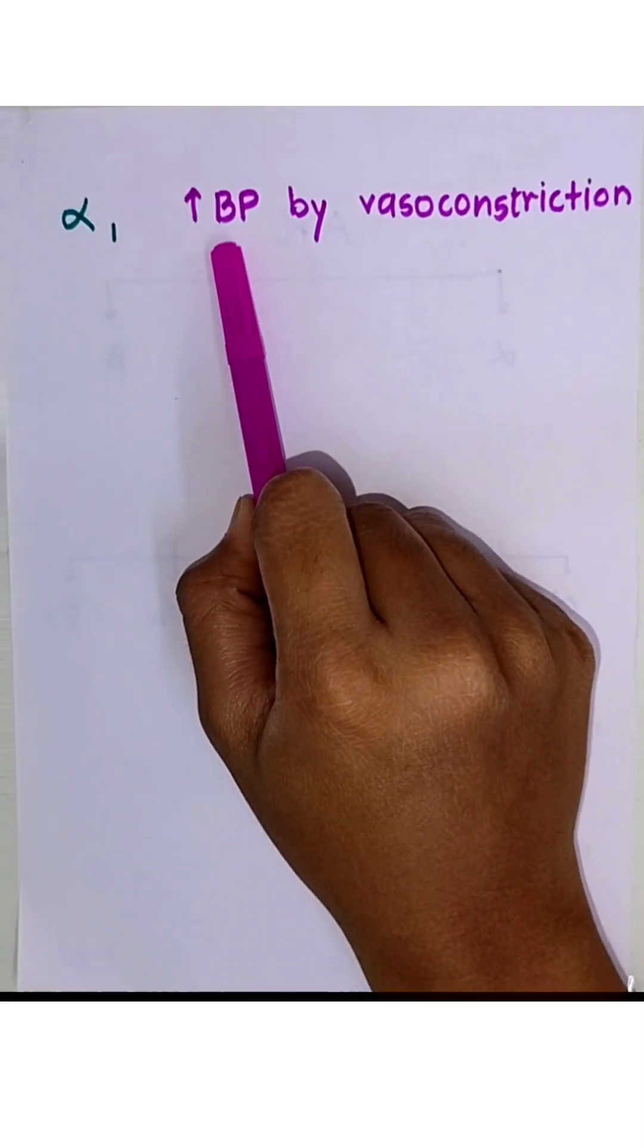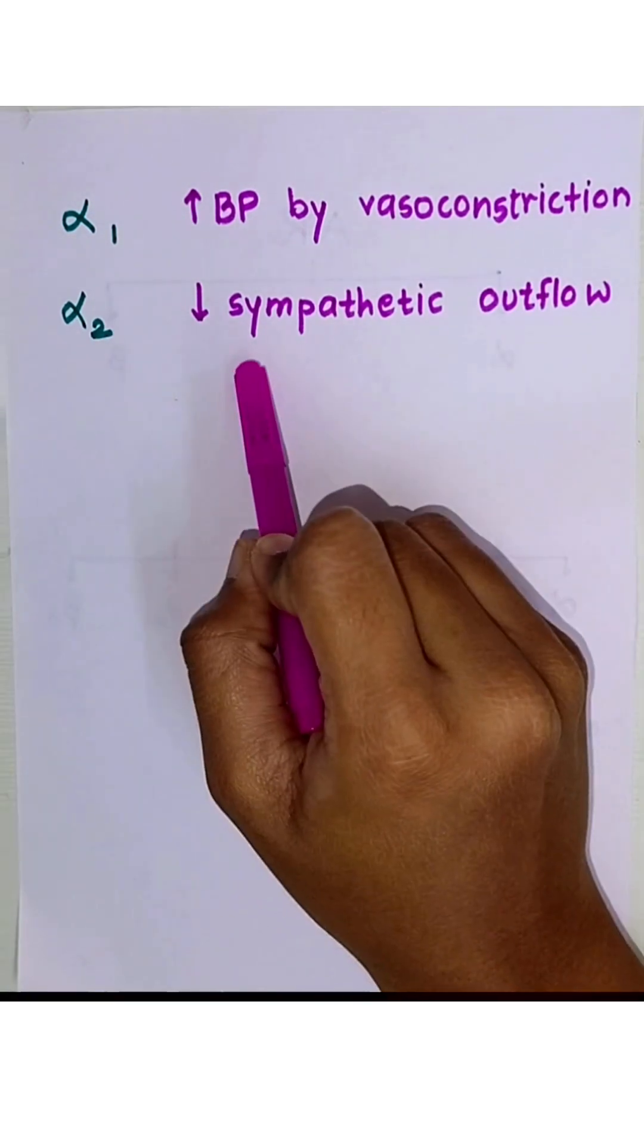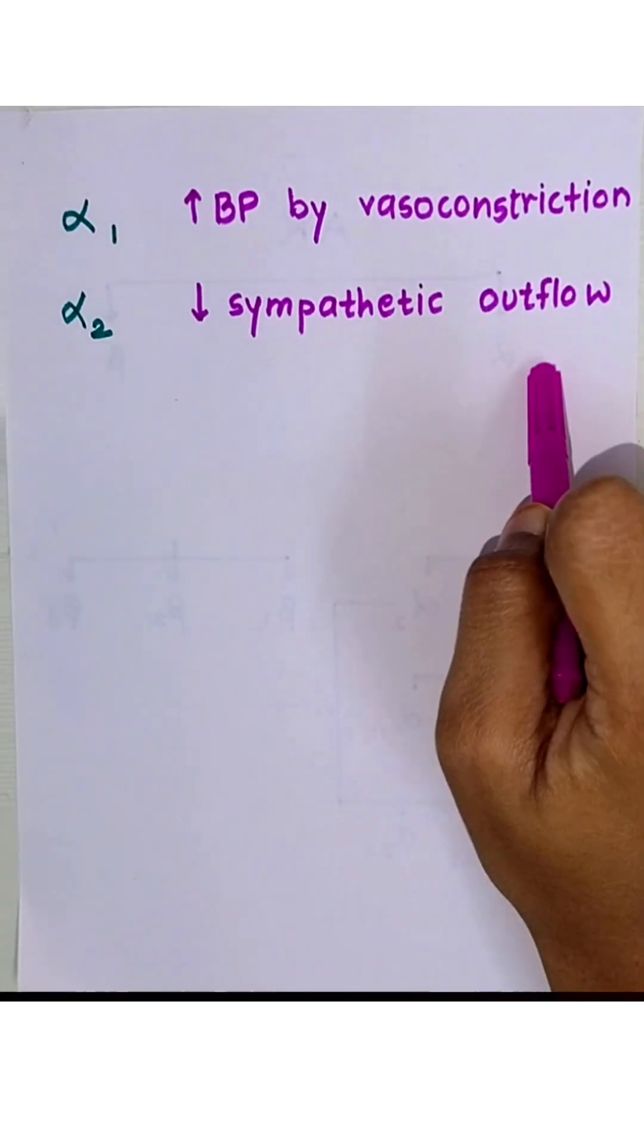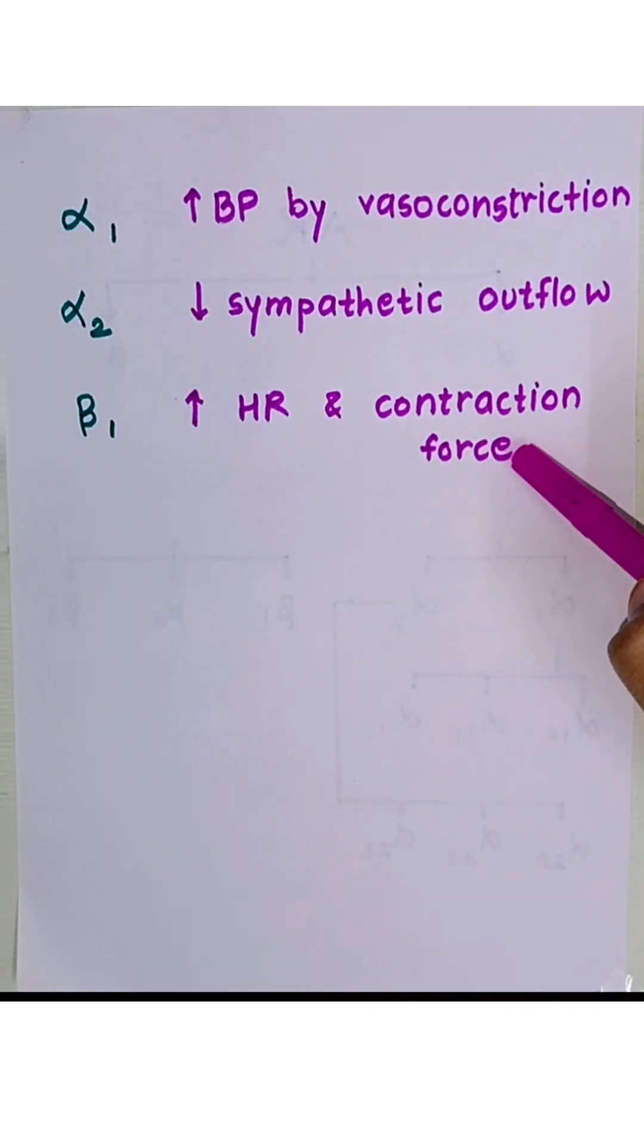Alpha1 increases blood pressure by vasoconstriction. Alpha2 decreases sympathetic outflow. Beta1 increases heart rate and contraction force.